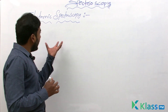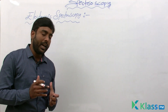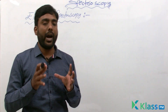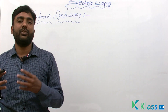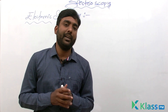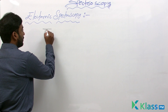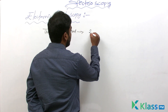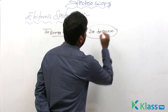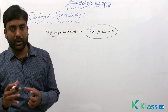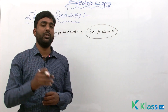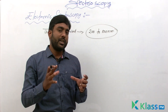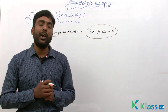In this electronic spectroscopy, we are going to study how this electron transition influences the characteristics of different chemical substances. The energy absorbed during electron transition of a molecule from the ground state to excited state is generally found in the range of 200 to 800 nanometers.